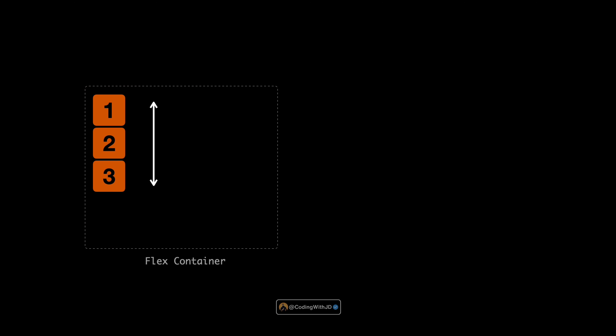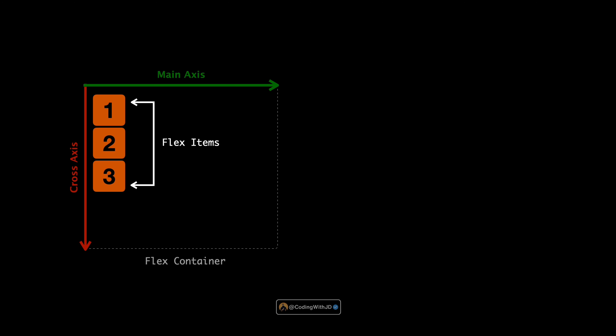First things first: to use flexbox we need a container and some items inside it. Let's say we have a box which is our flex container, and inside this box we have three smaller boxes which we'll call flex items. In flexbox we deal with two main axes — the main axis and the cross axis. By default the main axis runs horizontally and the cross axis runs vertically.